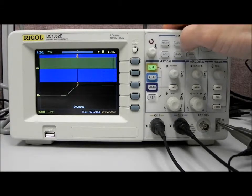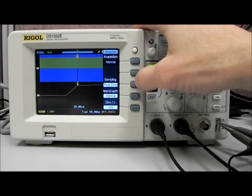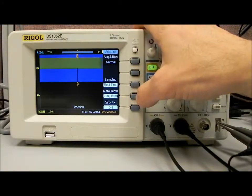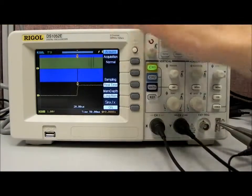The DS and the E series both have long memory. Go to acquire and we go to normal memory depth. And we're actually going to go to long memory. And you can see now it's filled in quite a bit.